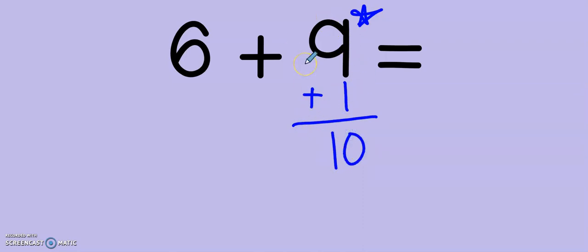But, if I added 1 to the 9, don't forget to take 1 away from the 6 to get me that new number, too. So, 6, 5. 5 plus 10 equals 15.